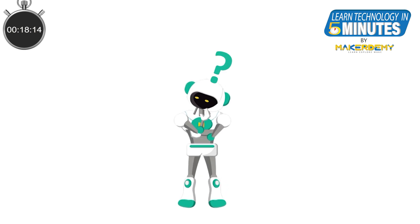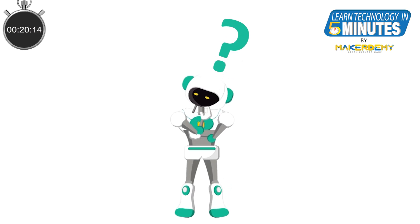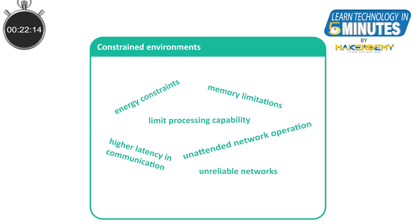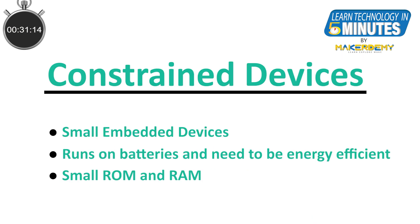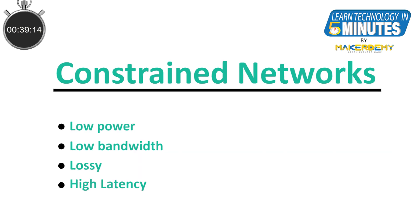What do you think are the constraints that this protocol is intended to address? As we have seen in our previous episodes, a lot of IoT applications are built to operate in constrained environments and devices. We are talking of small constrained embedded devices running on batteries and with very low ROM and RAM. We are also talking of low-power, low-bandwidth and lossy networks such as IPv6 over low-power wireless area networks, also known as 6LoWPAN.